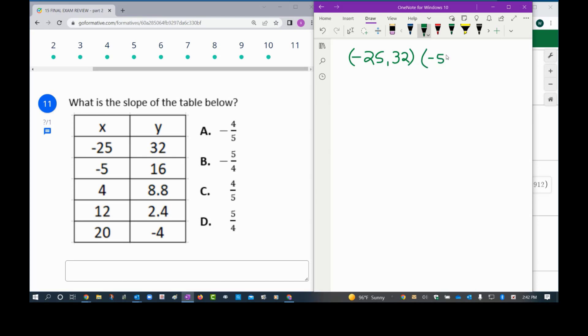So this would be negative 5 comma 16, and let's label x1, y1, x2, y2. And the formula is y2 minus y1 over x2 minus x1. Y2 is 16 minus 32, and on the bottom negative 5 minus negative 25.